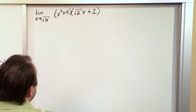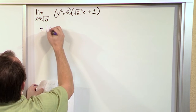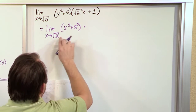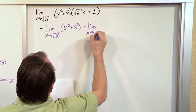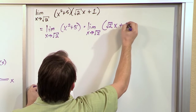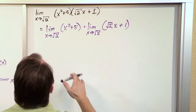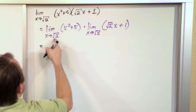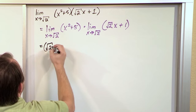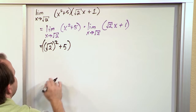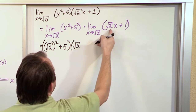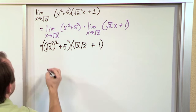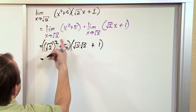So written out, it's the limit as x approaches the square root of 2 of x squared plus 5, multiplied by the limit as x approaches the square root of 2 of square root of 2 times x plus 1. Whenever I want to take each limit, I just plug in the square root of 2. So I get: square root of 2 squared plus 5, times square root of 2 times square root of 2 plus 1. The square root squared cancels, leaving 2 plus 5 in the first factor.